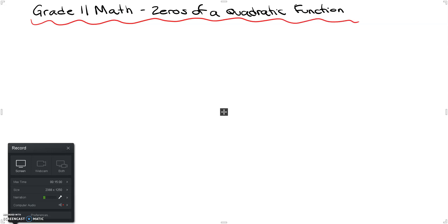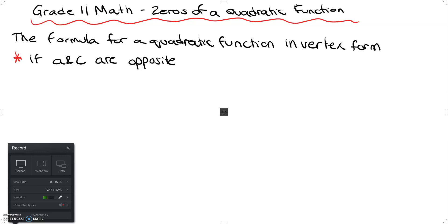Okay, so let's get started with that. So if we are given the formula for a quadratic function and like I said it's going to be written in vertex form, if we have what I want to call case one, if a and c in the formula are opposite then we're going to have two zeros.